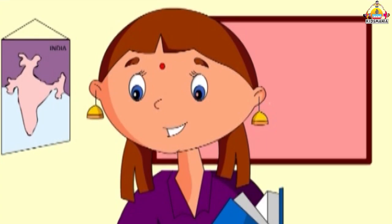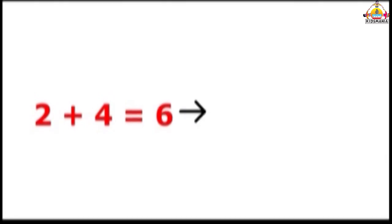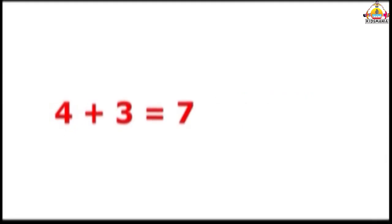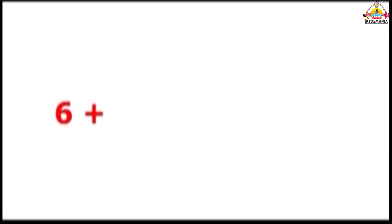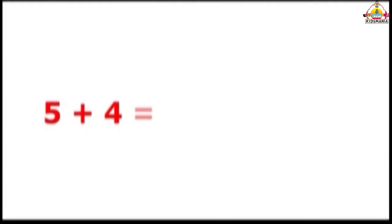Adding by row method. 2 plus 4 is equal to 6, 3, 4, 5, 6. 1 plus 2 is equal to 3, 2, 3. 4 plus 3 is equal to 7, 5, 6, 7. 6 plus 2 is equal to 8, 7, 8. 5 plus 4 is equal to 9, 6, 7, 8, 9.